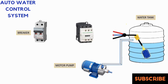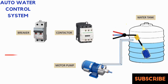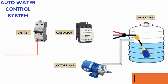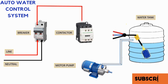In water management systems, the integration of a motor with a float switch ensures efficient control over water levels, preventing both low- and high-level extremes. This setup is crucial in maintaining optimal water levels in tanks, wells, or reservoirs.